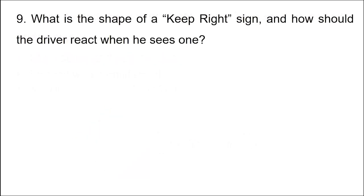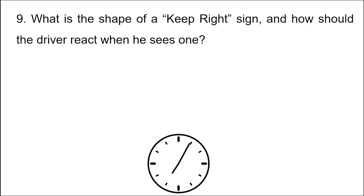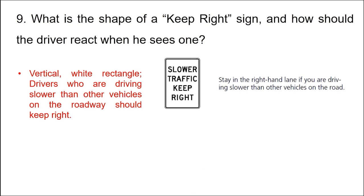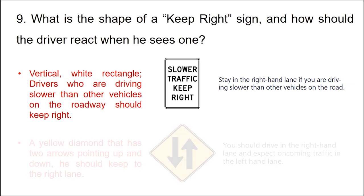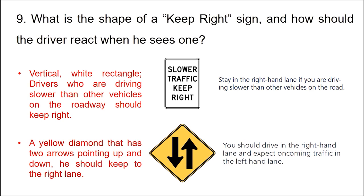Question: What is the shape of a keep right sign and how should the driver react when he sees one? A vertical white rectangle — drivers who are driving slower than other vehicles on the roadway should keep right. Stay in the right-hand lane if you are driving slower than other vehicles. A yellow diamond with two arrows pointing up and down means you should keep to the right lane and expect oncoming traffic in the left-hand lane.